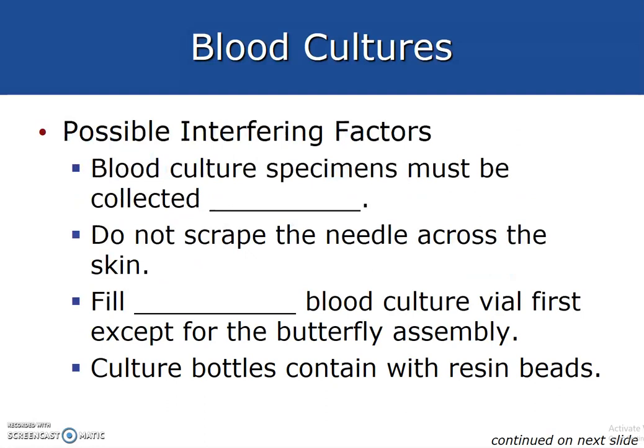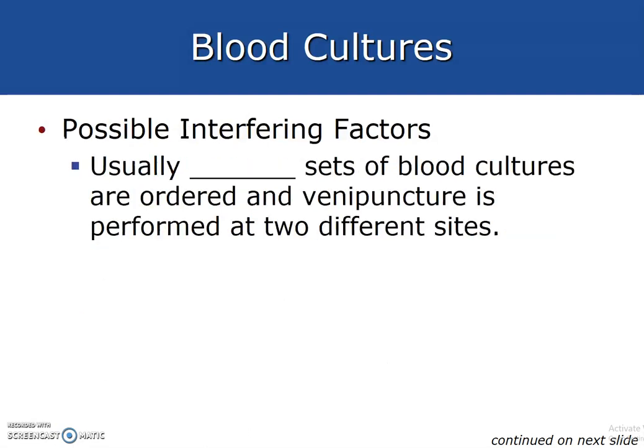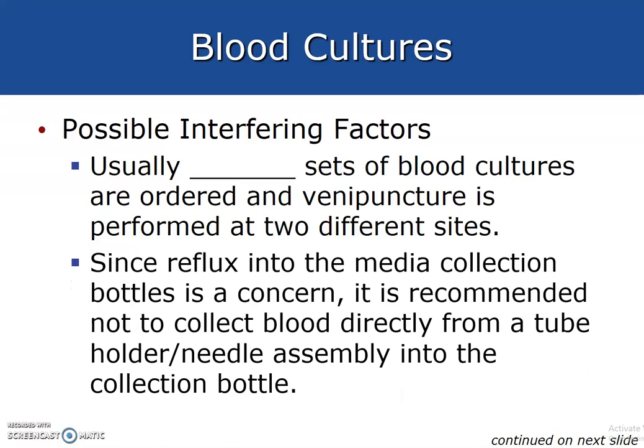Potential interfering factors for blood culture specimens: specimens must be collected first in our order of draw. Do not scrape the needle across the skin. Fill the anaerobic blood culture bottle first, except when using a butterfly assembly. Blood culture containers contain resin and beads. Usually two sets of blood cultures are ordered, with venipuncture performed at two different sites. Since reflux into the media collection bottles is a concern, it is recommended not to collect blood directly from a tube holder or needle assembly into a culture collection bottle — we will use a butterfly for this procedure.